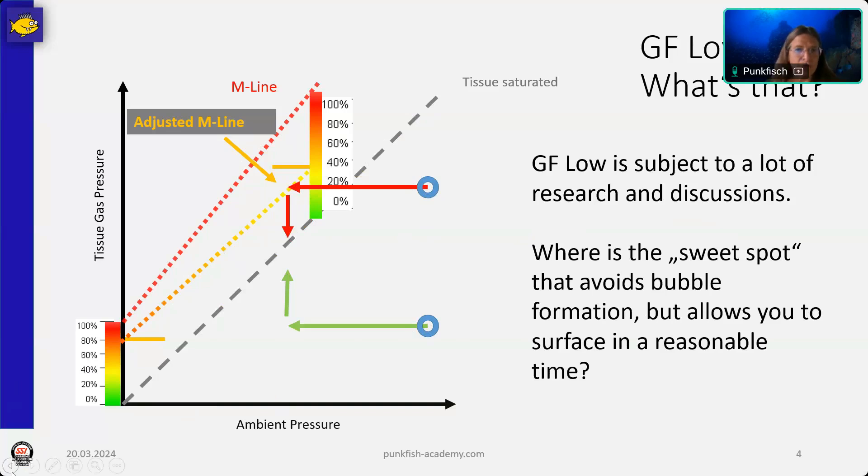So, no one will be able to tell you actually which gradient factors to choose. But I think there's one thing we can say, and this is that the gradient factor low should not be too far away from the gradient factor high. There were times when deep stops were very new and everyone thought deep stops were something good and important. And when people did play with settings like 10/90, and this is something which I would say is not something anyone would use anymore today. But which relation between the two gradients is the best? This is something no one can really tell you.